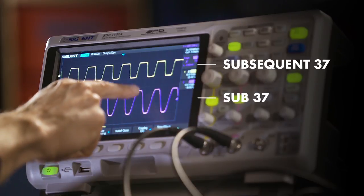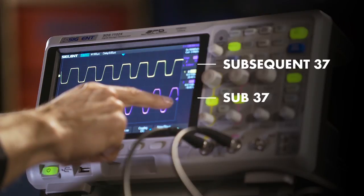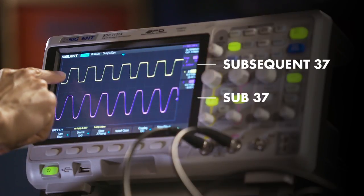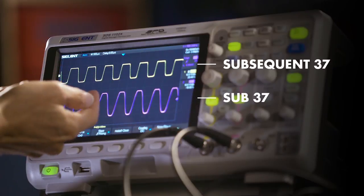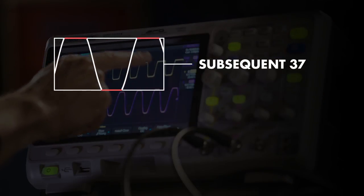You see that there is clipping on the bottom and top of the waveforms, but it still has somewhat of a sinusoidal characteristic. On the top trace, or the yellow, which is the Subsequent 37, you see that that distortion is greatly increased, and now you get much more dramatic clipping on the top and bottom of the waveform.